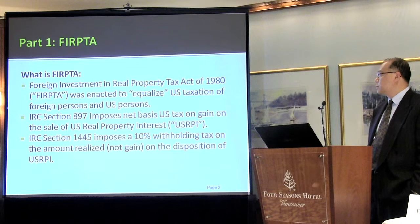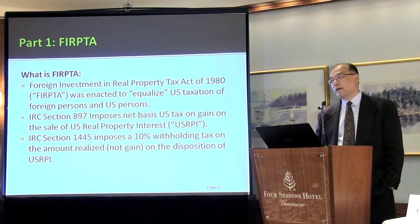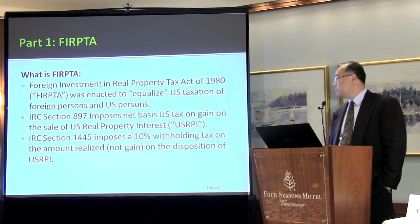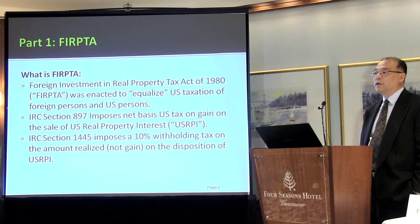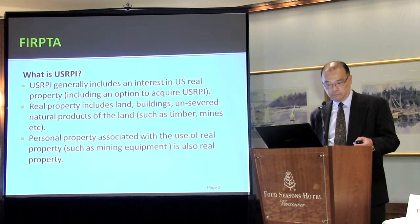There are two components to FERPTA. There is the taxing provision, which is under Code Section 897. And then there is a withholding provision that makes sure that the foreign person pays, and that's under 1445. Under 1445, there's a 10% withholding tax whenever a non-U.S. person sells U.S. RPI — the buyer is supposed to withhold on the proceeds at 10%.